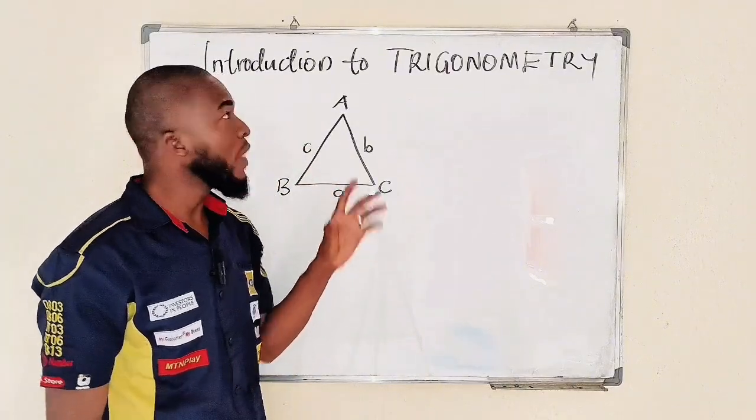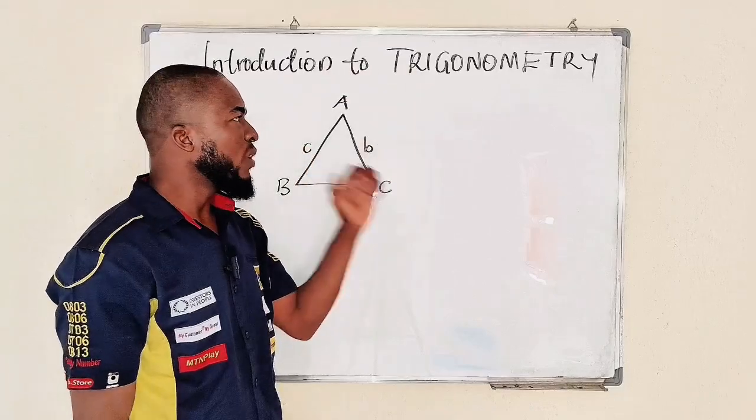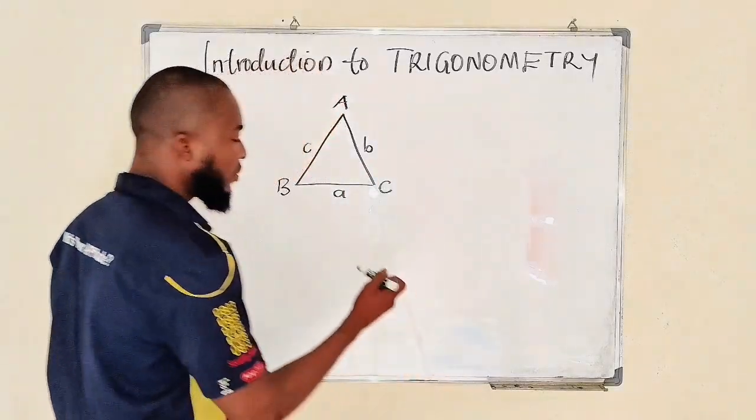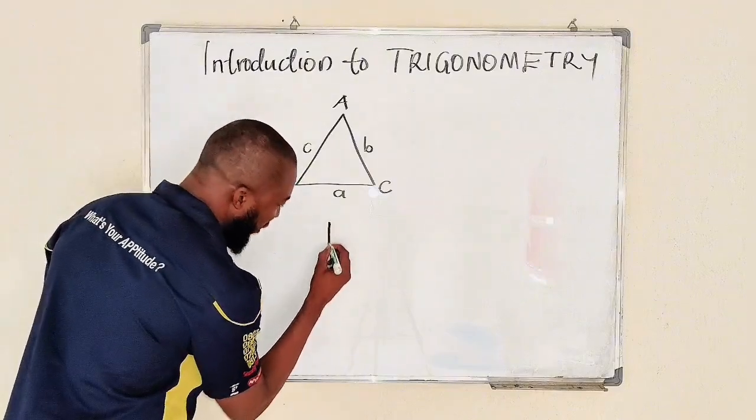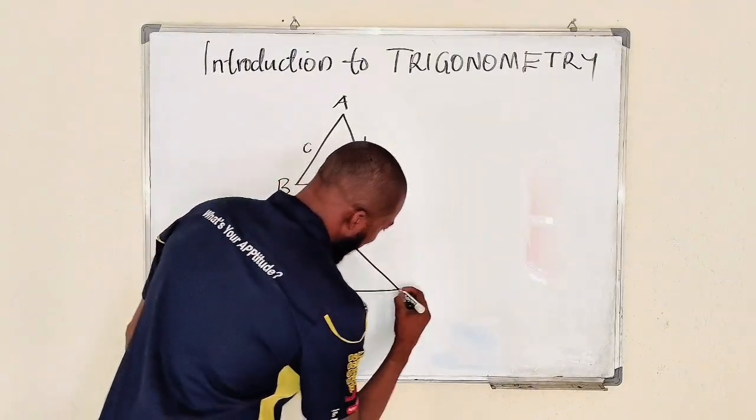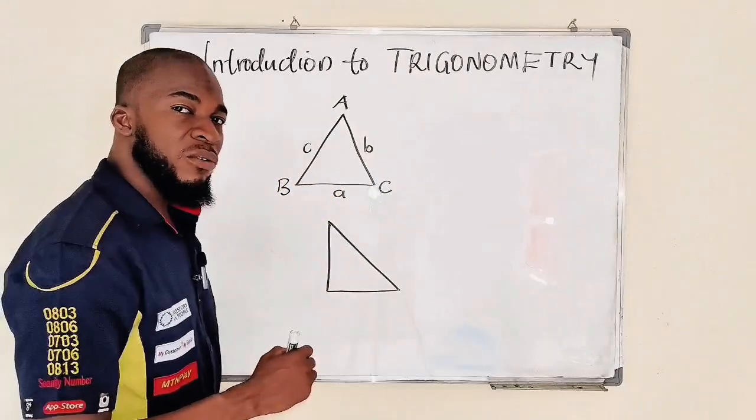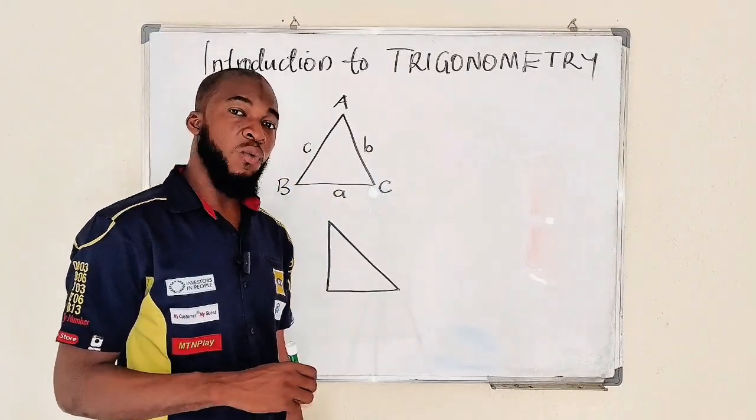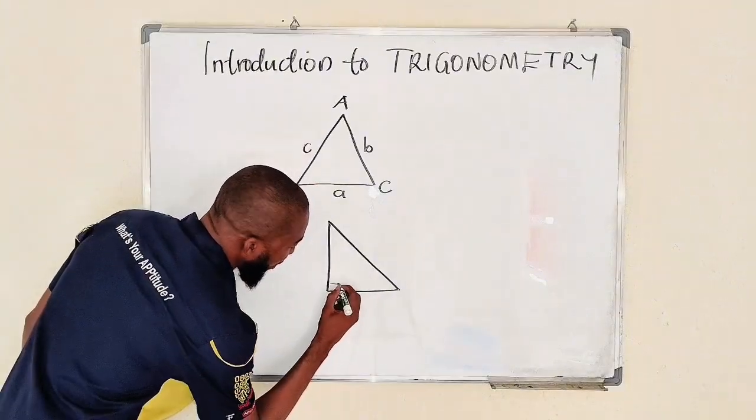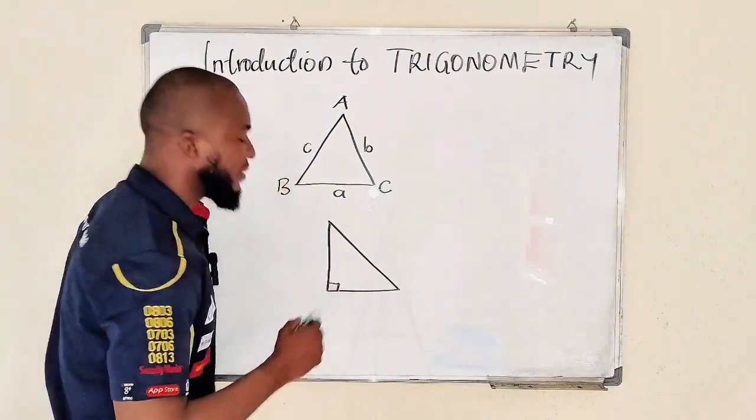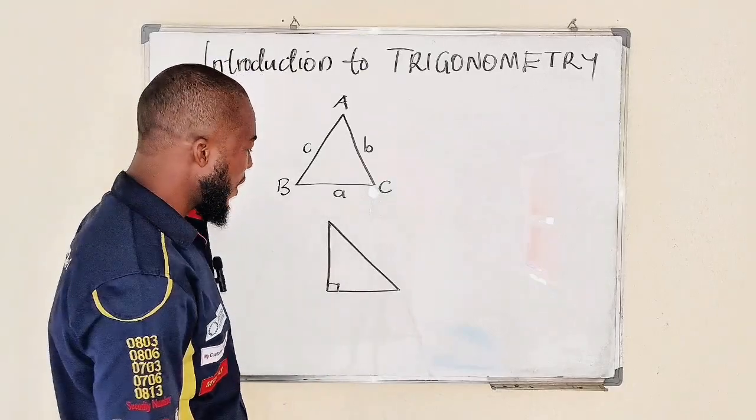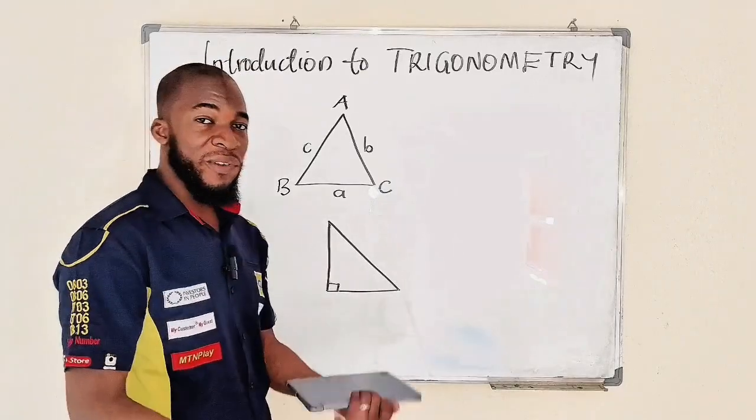This chapter will focus more on right angle triangle. What is a right angle triangle? This is how it looks like. It is called a right angle triangle because one of the interior angles equals 90 degrees. So this angle right here is measured 90 degrees, and we always have a reference angle.